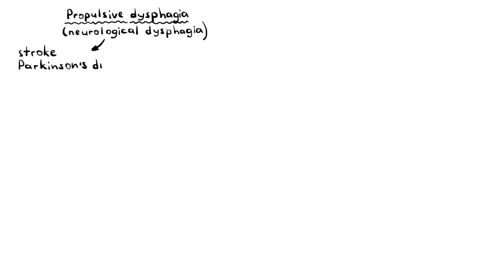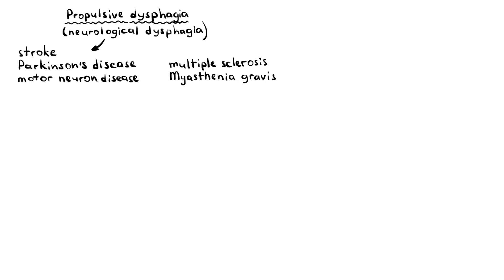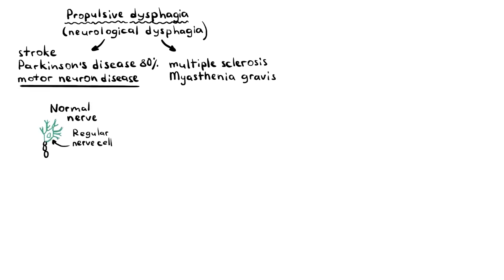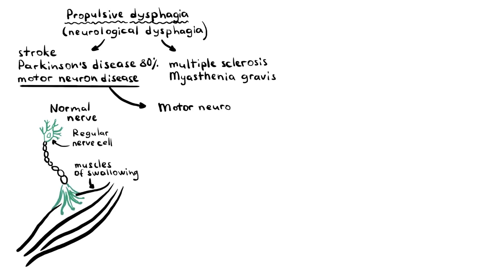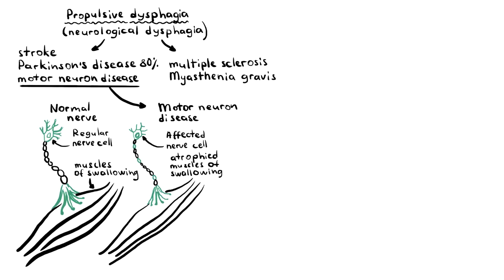The propulsive or neurological causes of oropharyngeal dysphagia include stroke, Parkinson's disease, motor neuron disease, multiple sclerosis, and myasthenia gravis. 80% of patients with Parkinson's disease develop oropharyngeal dysphagia. Motor neuron disease is a neurodegenerative disease affecting the motor nerve fibres, resulting in muscle weakness and atrophy. Studies have shown that the mechanism of dysphagia is due to progressive degeneration of the corticobulbar pyramidal fibres that control the swallowing centre.